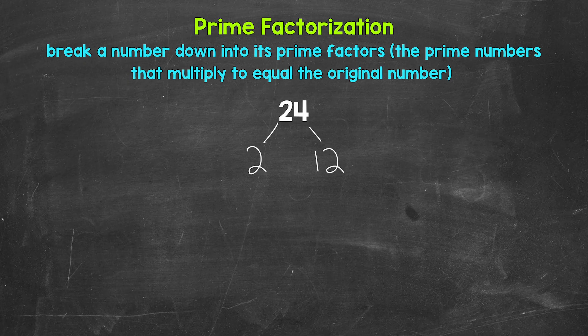We want to continue to break this down until we have all prime numbers. Two is a prime number, so we are done over here. I'm going to circle two to show that we have a prime number. Now, 12 is a composite number. We can continue to break 12 down.